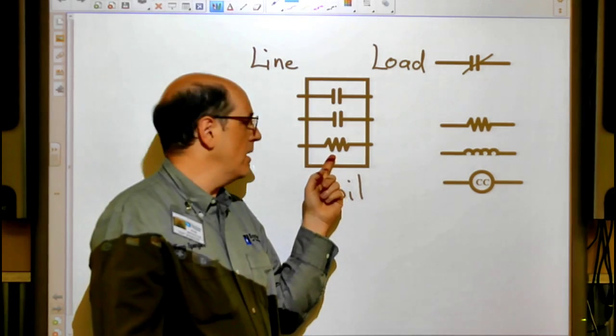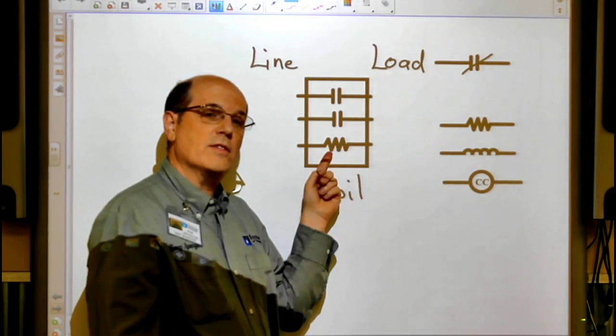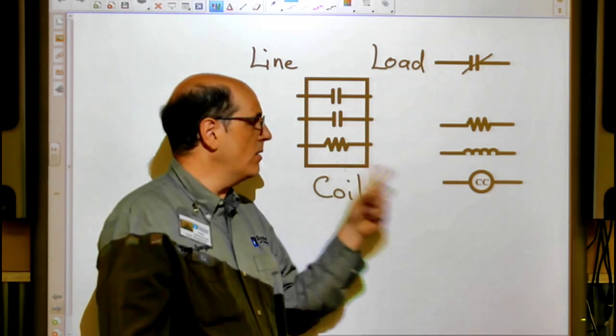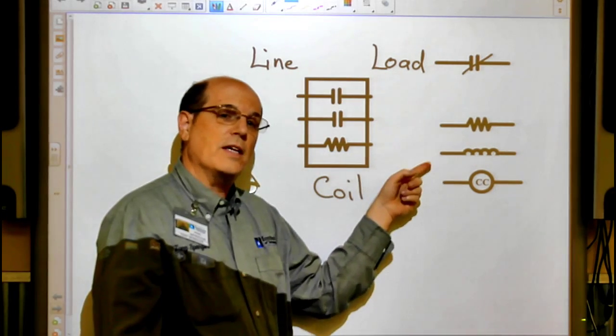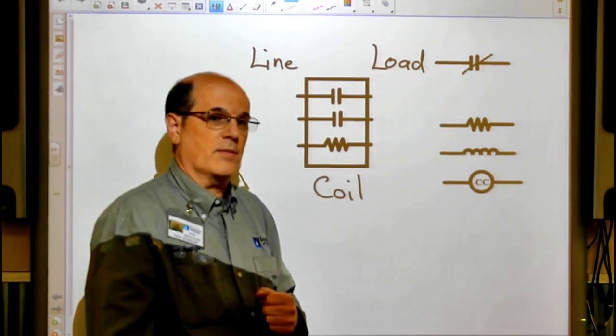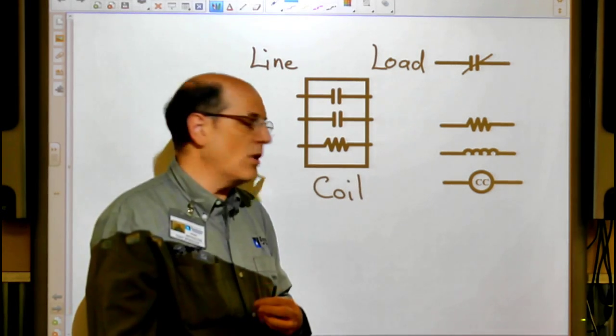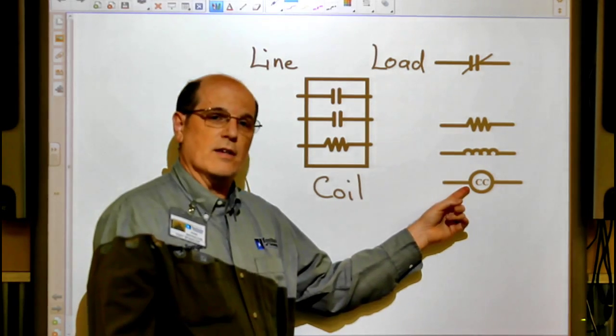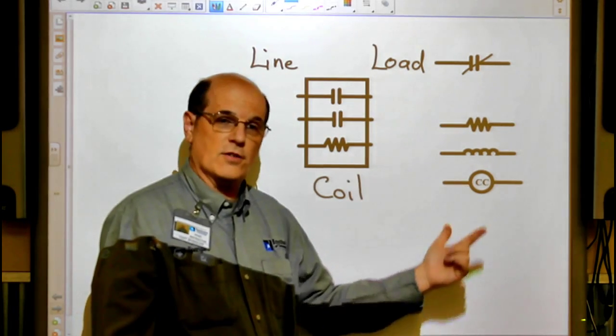Here we can see the coil. In this example, this is how I'm depicting the coil. These are other ways that we can see the coil depicted depending on who's drawing the circuit. The bigger the circuit gets, the more likely you're going to see something like this - CC for contactor coil.